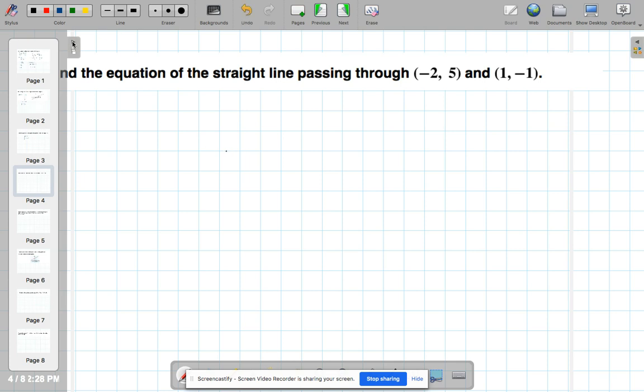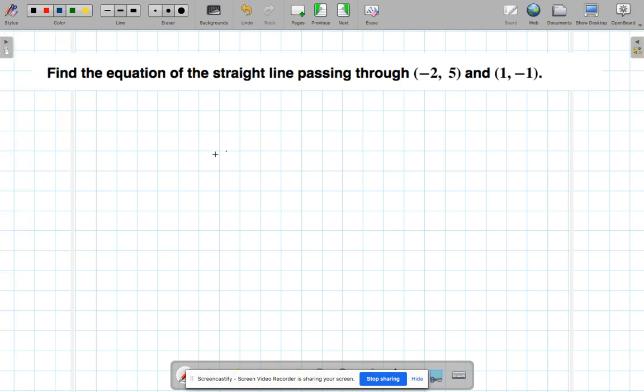Okay, so today we're going to look at some questions involving a really important formula that will give you the equation of a line given the gradient and one point. I sometimes call it the gradient-point formula.